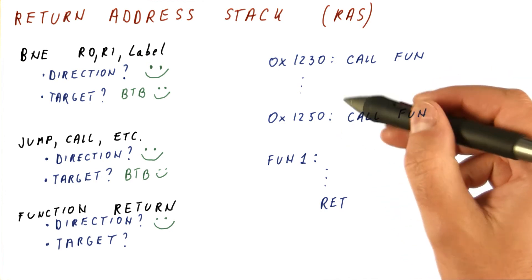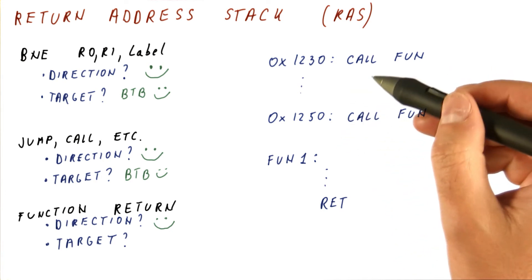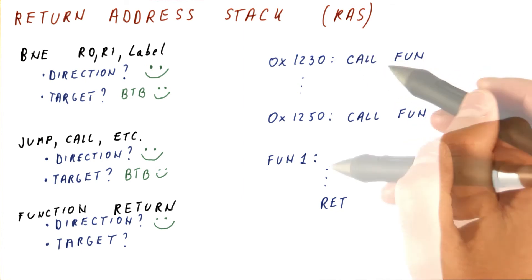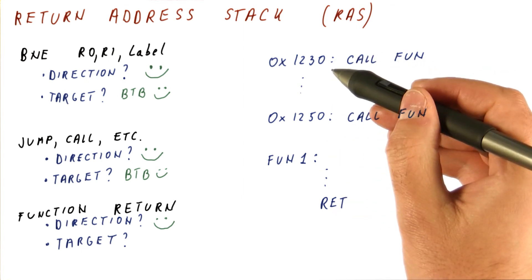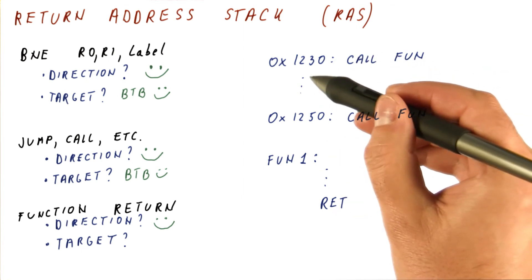The BTB, in this case, will not do too well. Why? Well, because when we call this and return here, the BTB will remember that this is the target address.